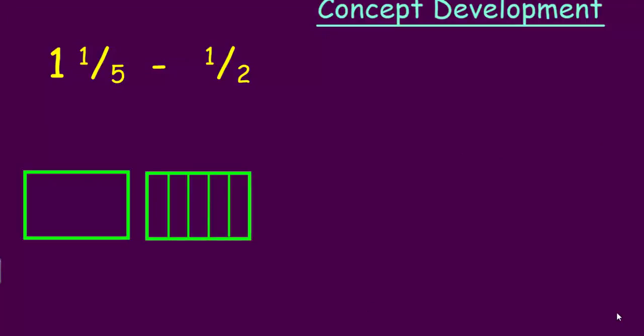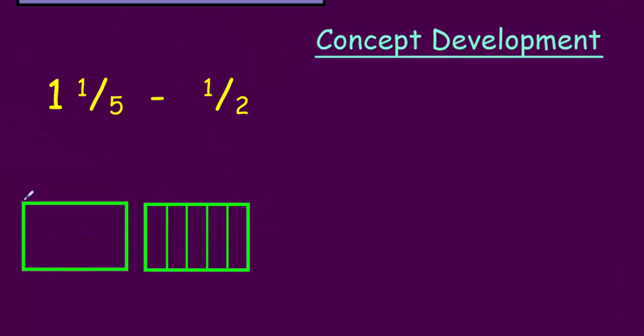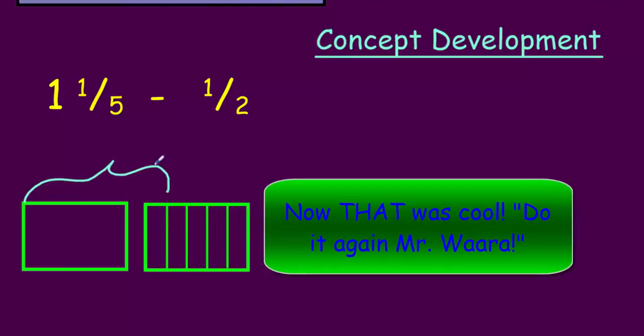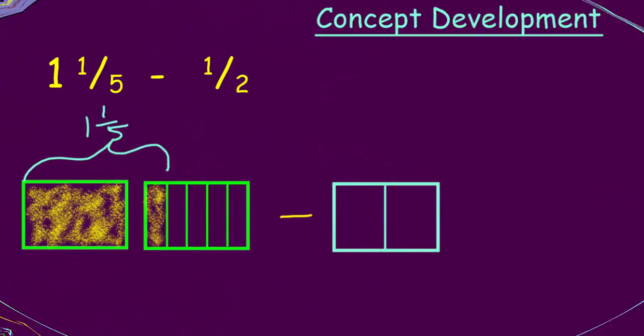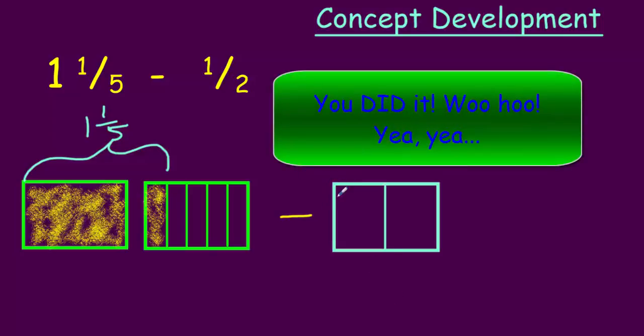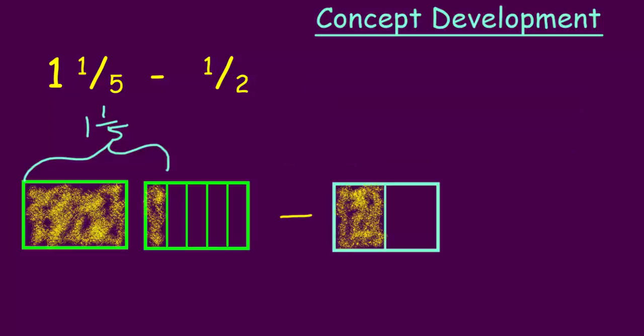The first thing I want to show you is I want to show you our problem representing one and one-fifth. Okay, I will show this going like so. Here's my one and one-fifth right here. And I can shade this in to show my one and one-fifth. Now, I'm going to subtract one-half. So here I have a whole, but I've taken that whole and I've split it in halves. I'm going to shade in just half. Now I have my one and one-fifth minus one-half, showing this with models.